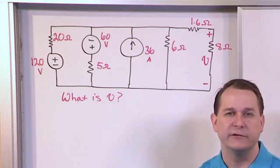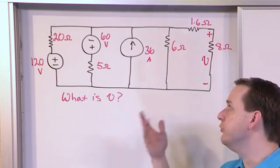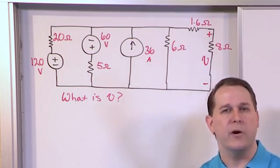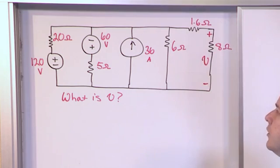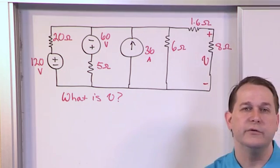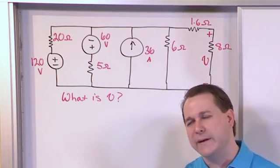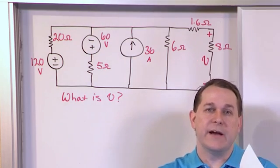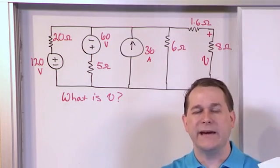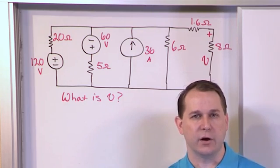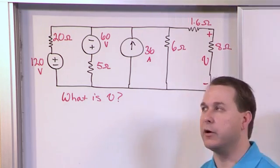Now, just like we said in the last section, there's lots of ways to solve a problem. You could use node voltage here, mesh current, you can do other things to find this voltage. But in this section we want to use source transformations to simplify the problem down to a point where we can make it really easy to look at and then quickly solve with Ohm's law or something like that.